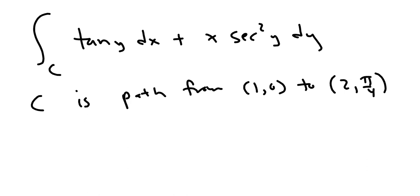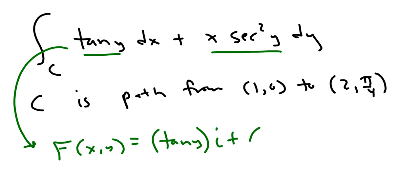So what we have to do then, is take a look here and here, and realize that that's our vector field. So their vector field f(x,y) is equal to tangent y times i plus x secant squared y times j.